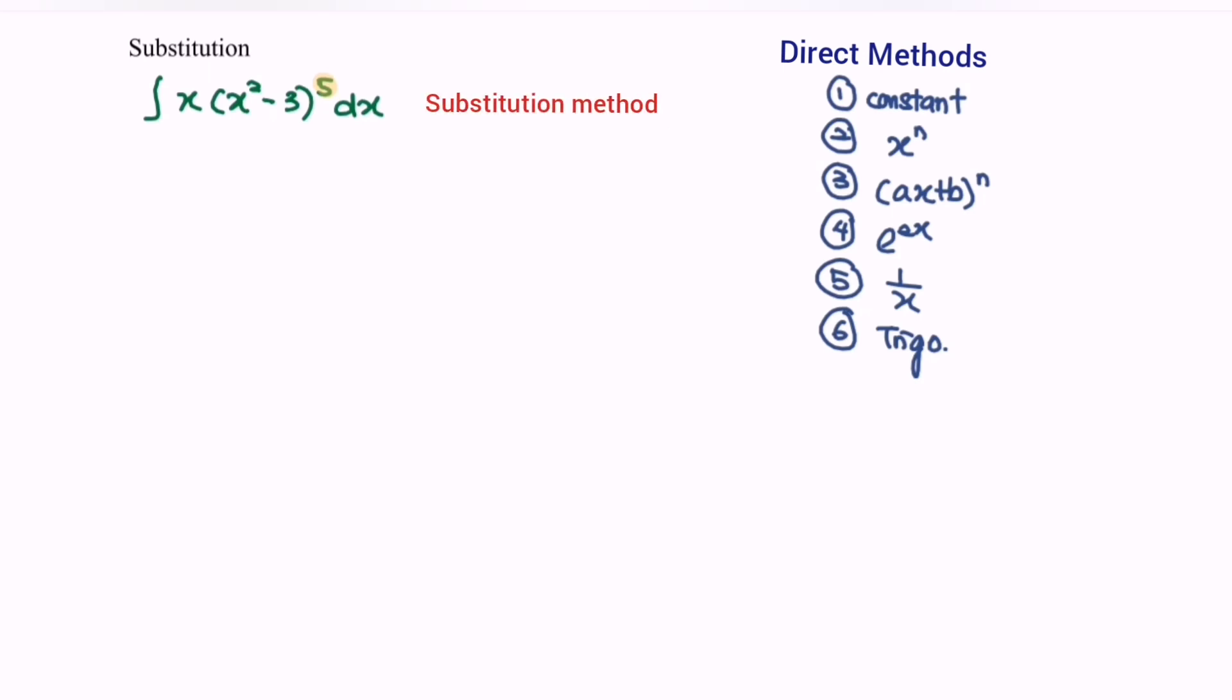Let u equals x² minus 3. For the substitution method, we can only select the u for a part instead of the whole. Next, we are going to differentiate u with respect to x, so we will have 2x.